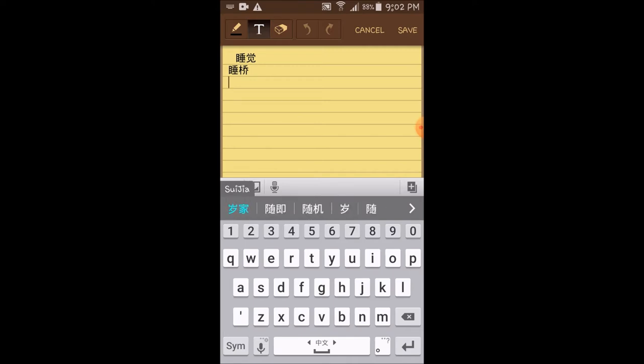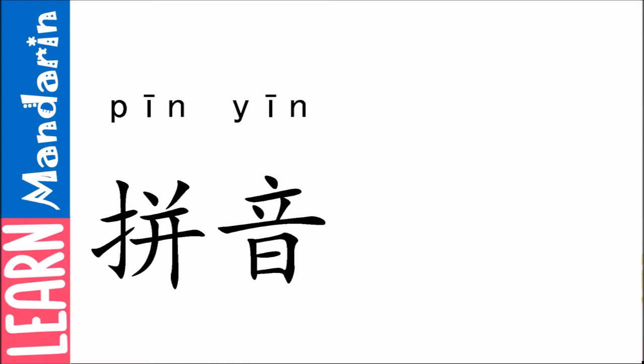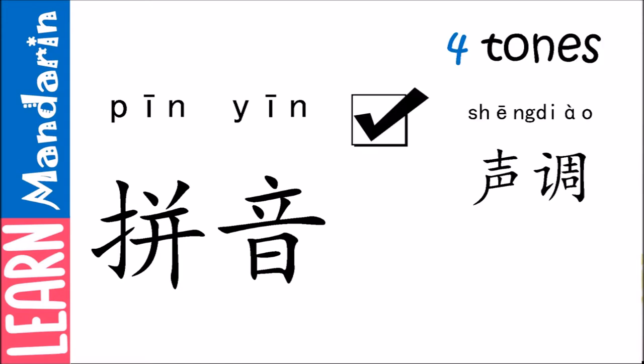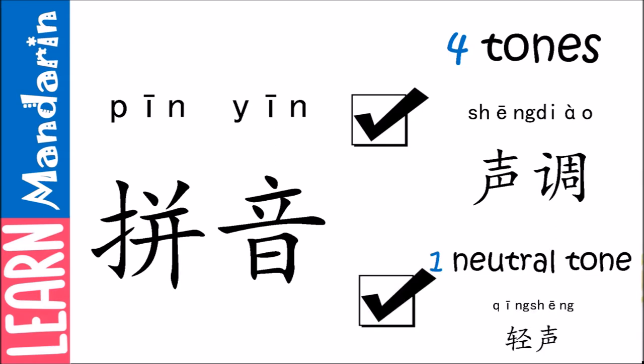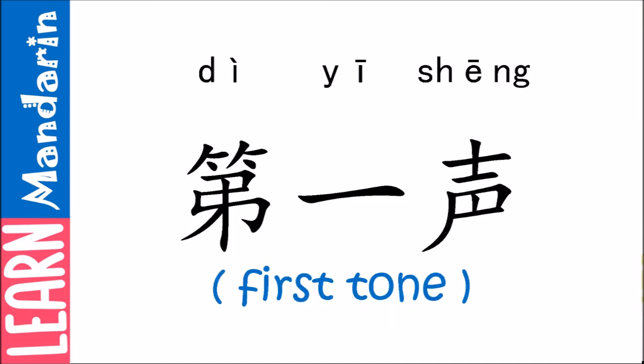Now that we know how important 拼音 is, let me guide you step by step on how 拼音 works. Let me start by introducing the different tones. 拼音 has four main tones and one neutral tone.